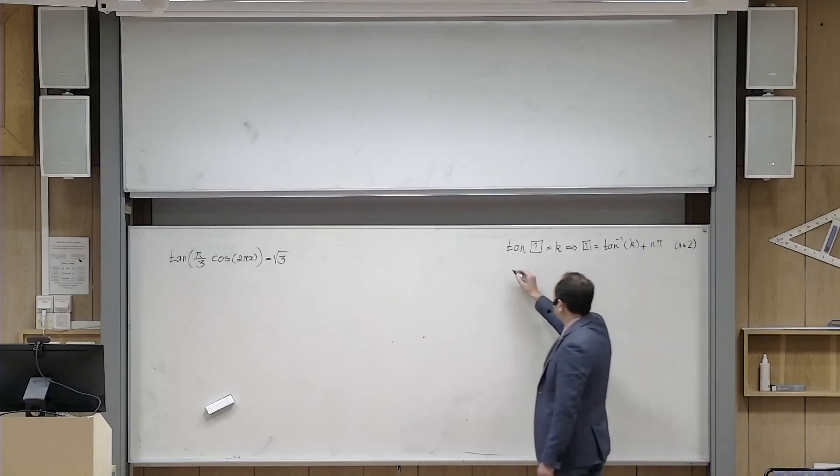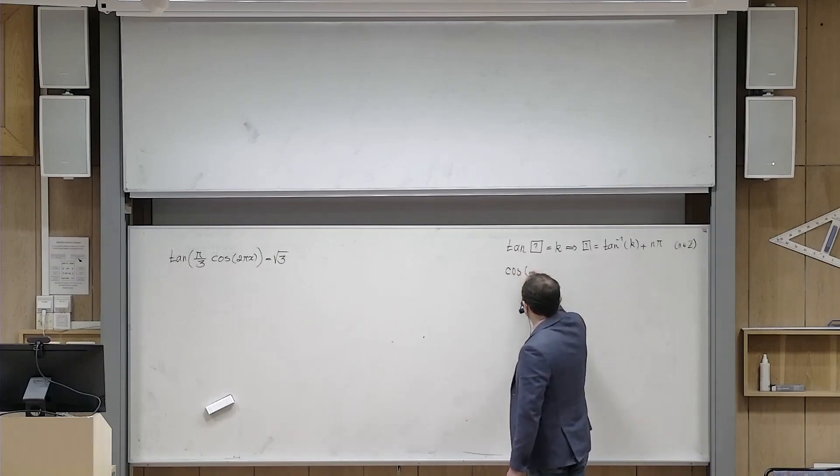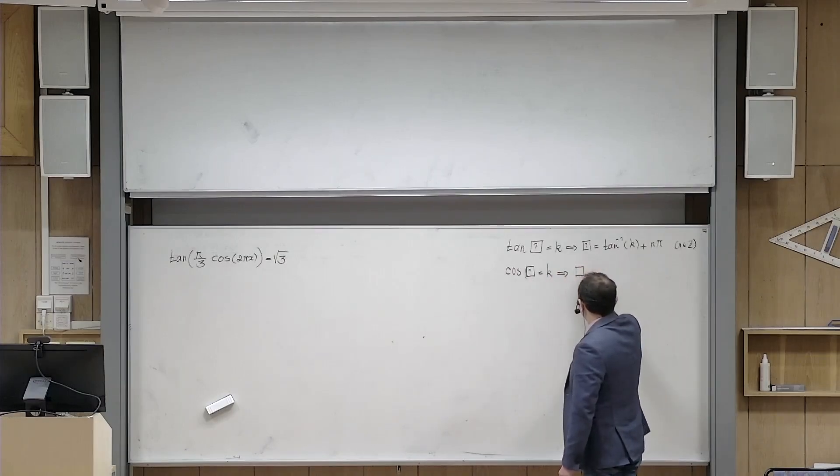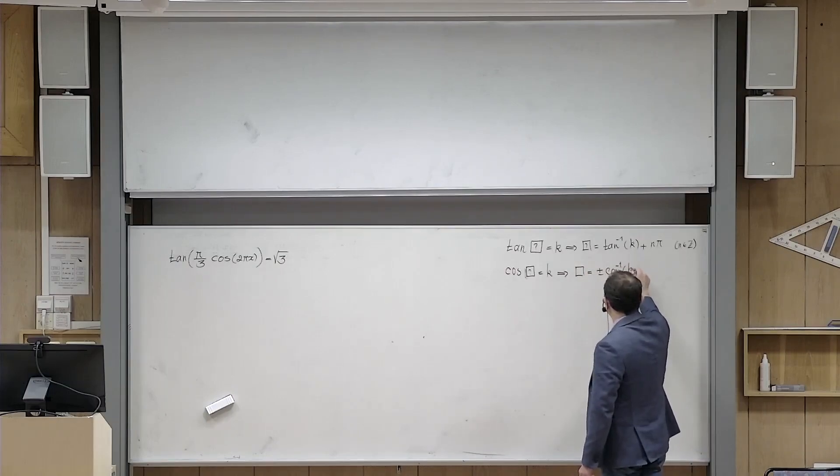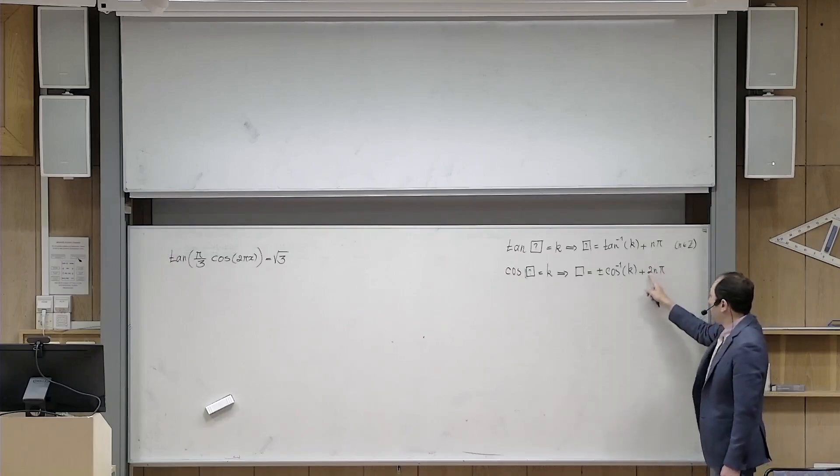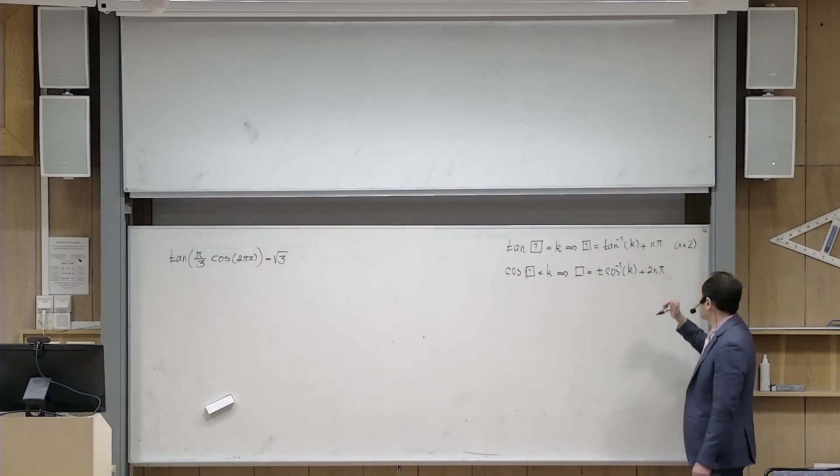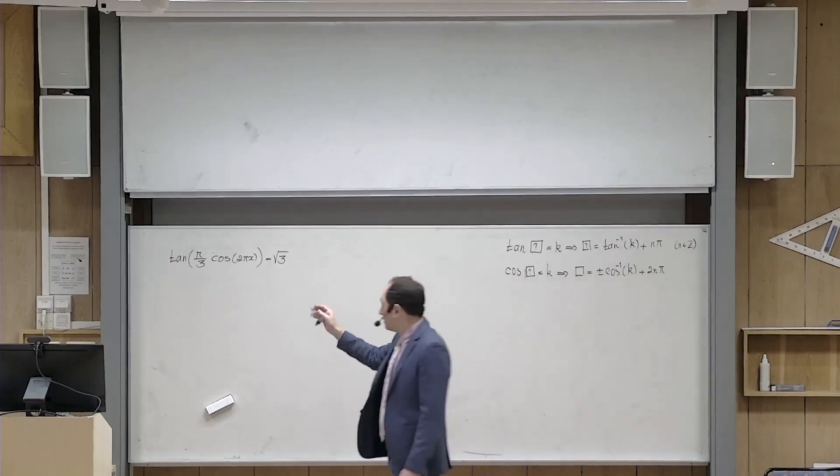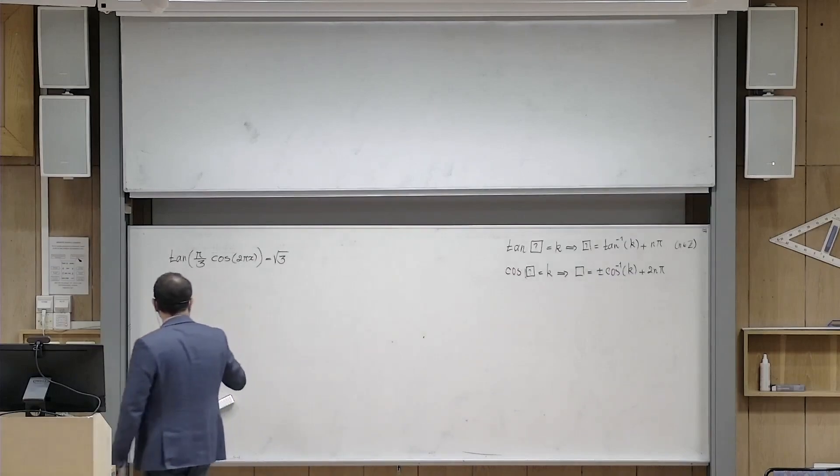And then we also know that if cosine of an unknown expression is equal to k, then what is inside that box should be equal to plus or minus cosine inverse of that number plus 2n pi. Here we have any multiple of pi acceptable, but here we should have only even multiples of pi. Again, n is an integer.